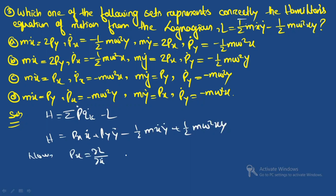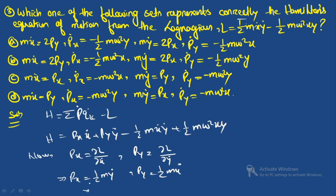We find the canonical momenta: p_x = ∂L/∂ẋ = ½mẏ, so mẏ = 2p_x; and p_y = ∂L/∂ẏ = ½mẋ, so mẋ = 2p_y. From the options, mẋ = 2p_y and mẏ = 2p_x — this already narrows it to options A or B.